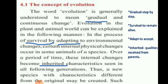Evolution in the plant and animal world can be explained in the following manner. In the process of survival, by adapting to environmental changes, certain internal physical changes occur in some animals of a species. Survival means to remain alive. Adapting means accepting and adjusting to the environmental changes.